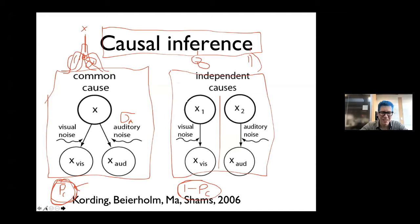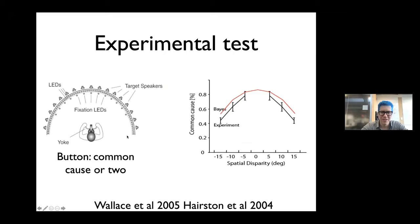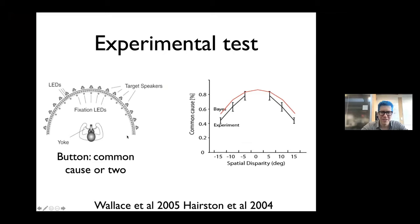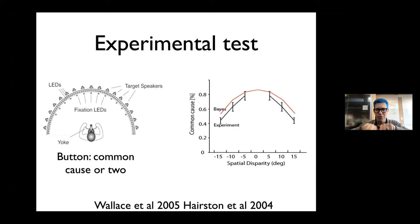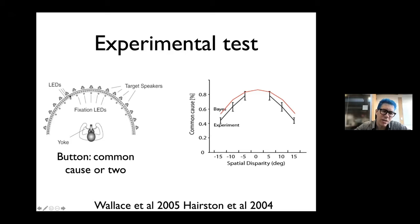Let's go back to causal inference. Here's a beautiful paper by Wallace and Hairston. They have subjects in a dark room, with a yoke — basically a device for pointing a laser — and lots of fixation LEDs, so subjects always look at the same spot to avoid eye movement effects. They have LEDs that flash on, and behind the LEDs lots of loudspeakers. They calculate, as a function of spatial disparity — the angle between the LED and the loudspeaker — how people perceive common or separate causes.